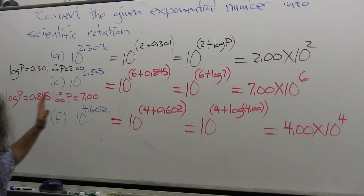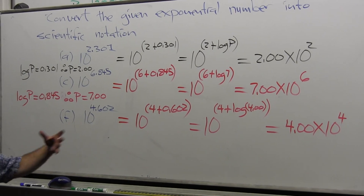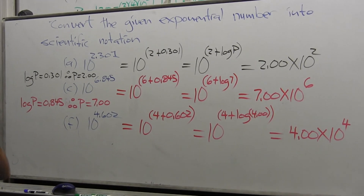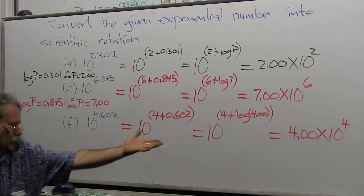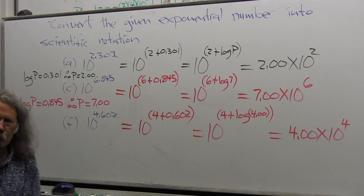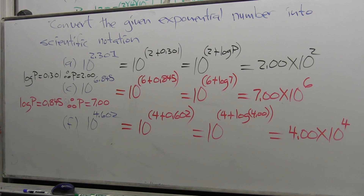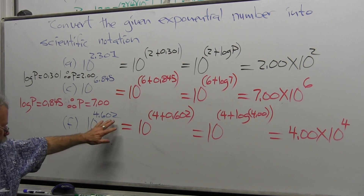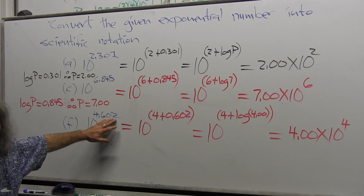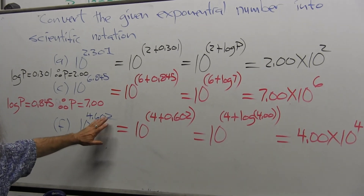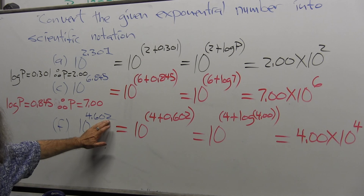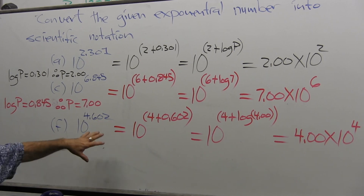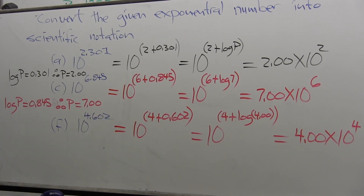It becomes very comfortable going both ways with a little bit of practice. You start to spot the mantissa number and immediately recognize the corresponding p value. We never lose track of precision — how many significant figures there are. That's why we're only going three digits to the right of the decimal.